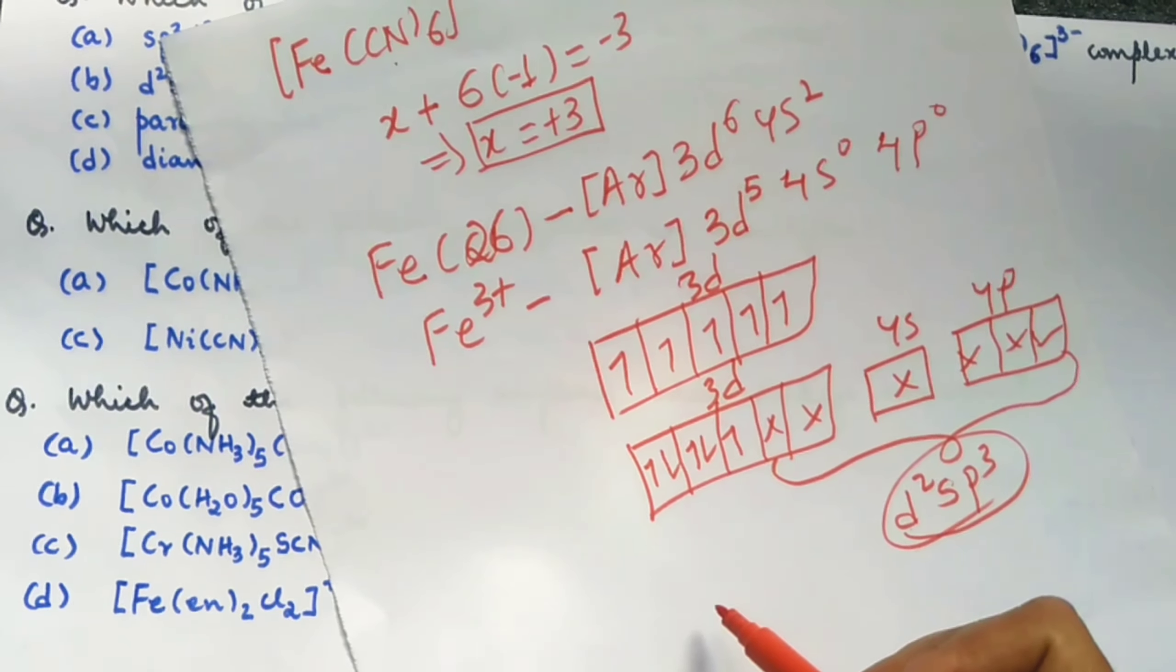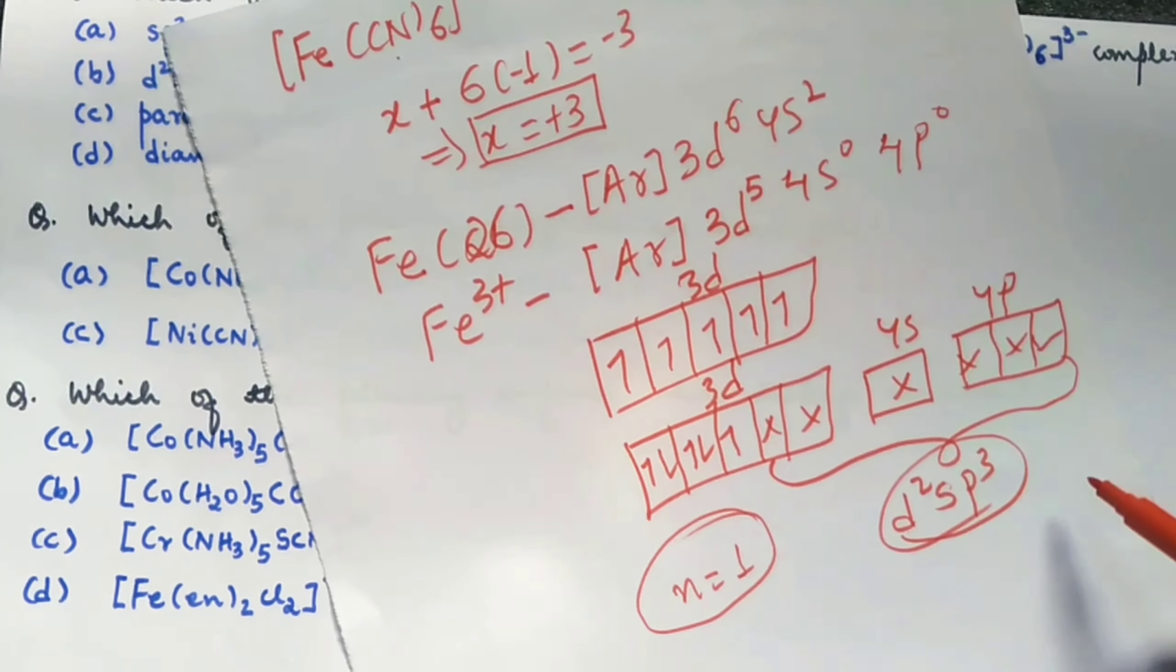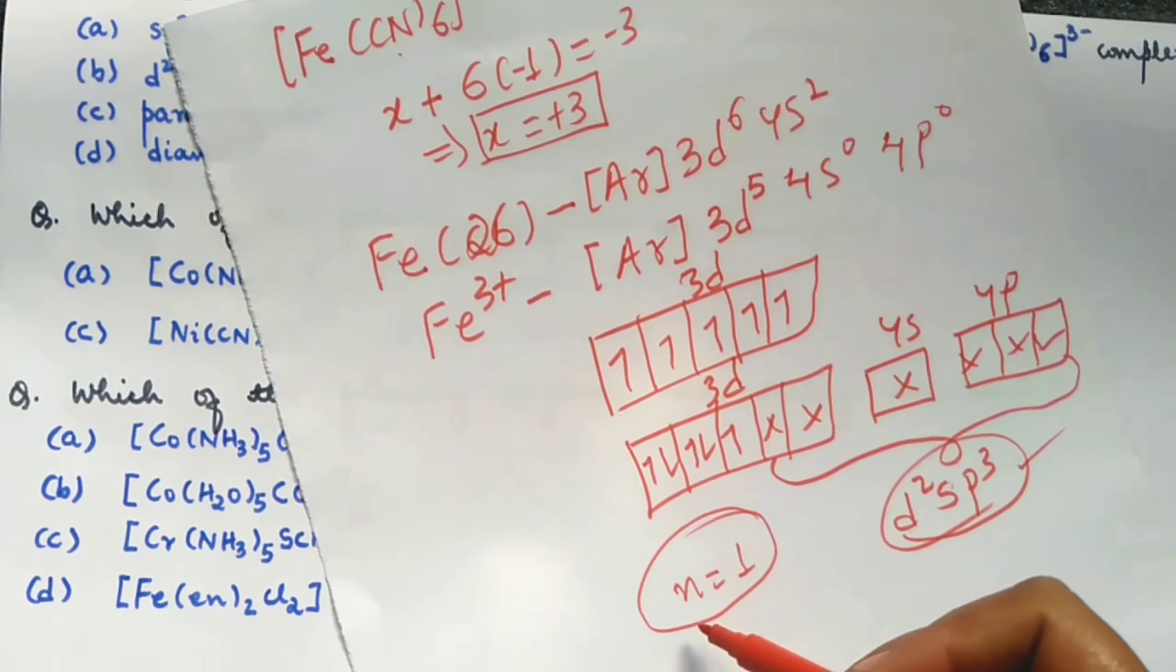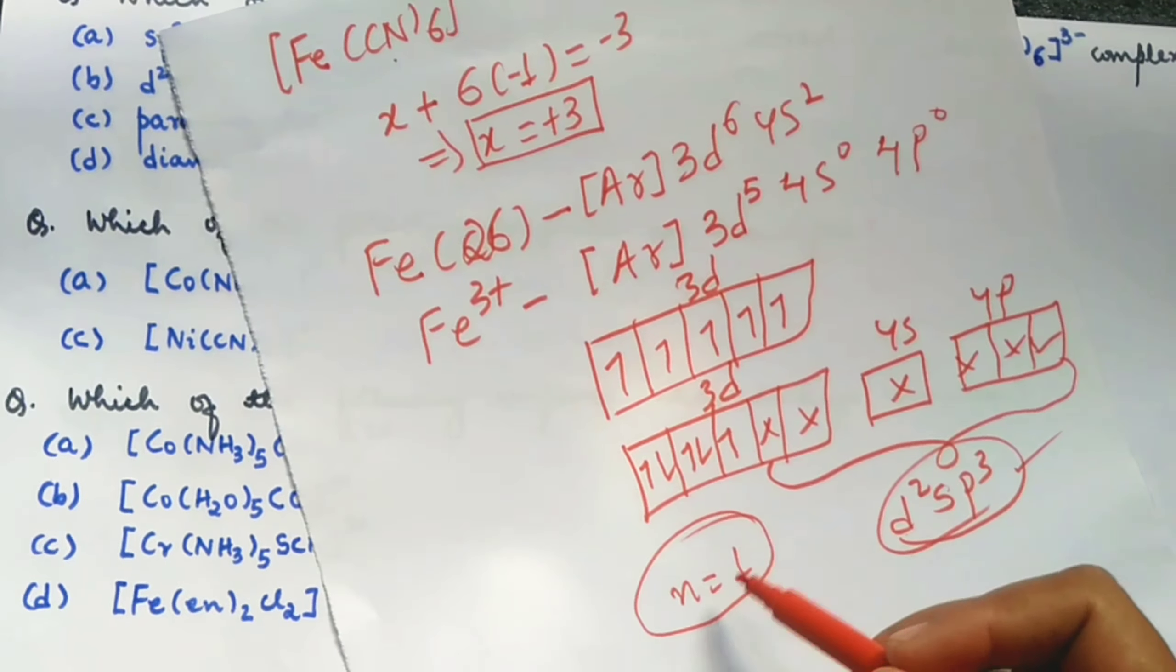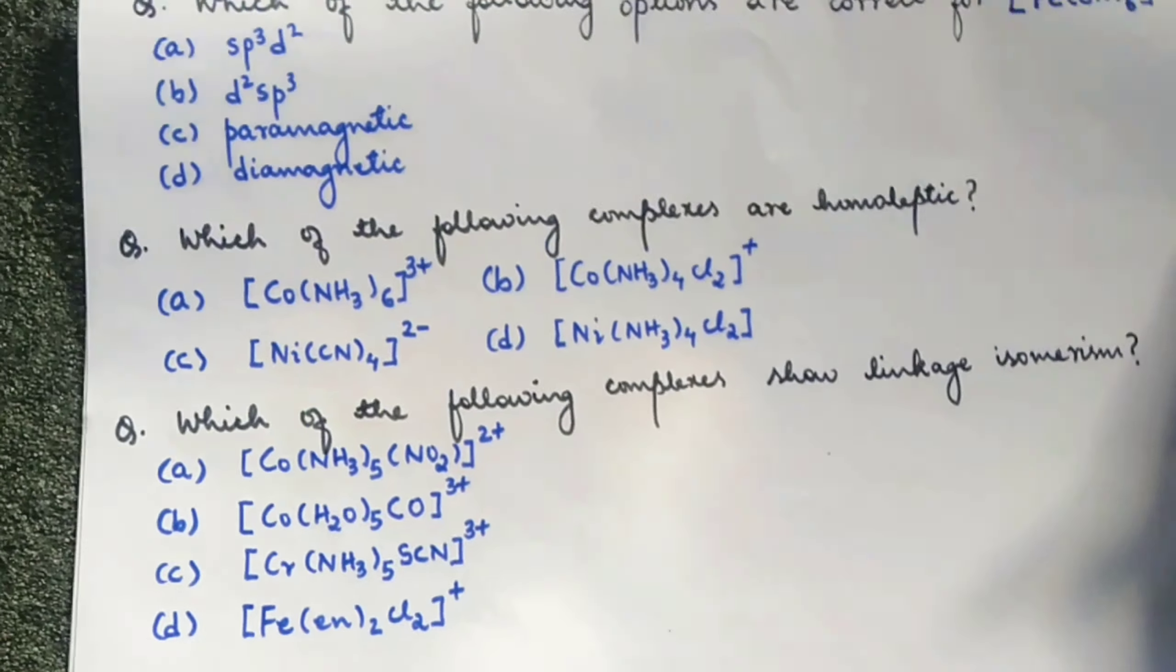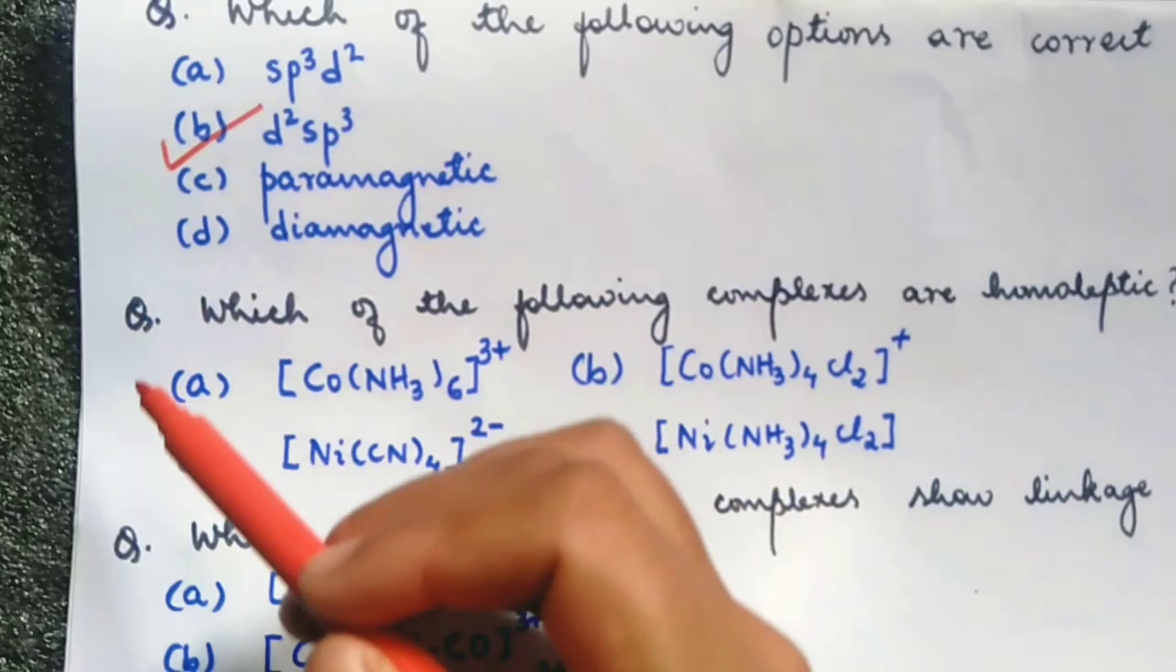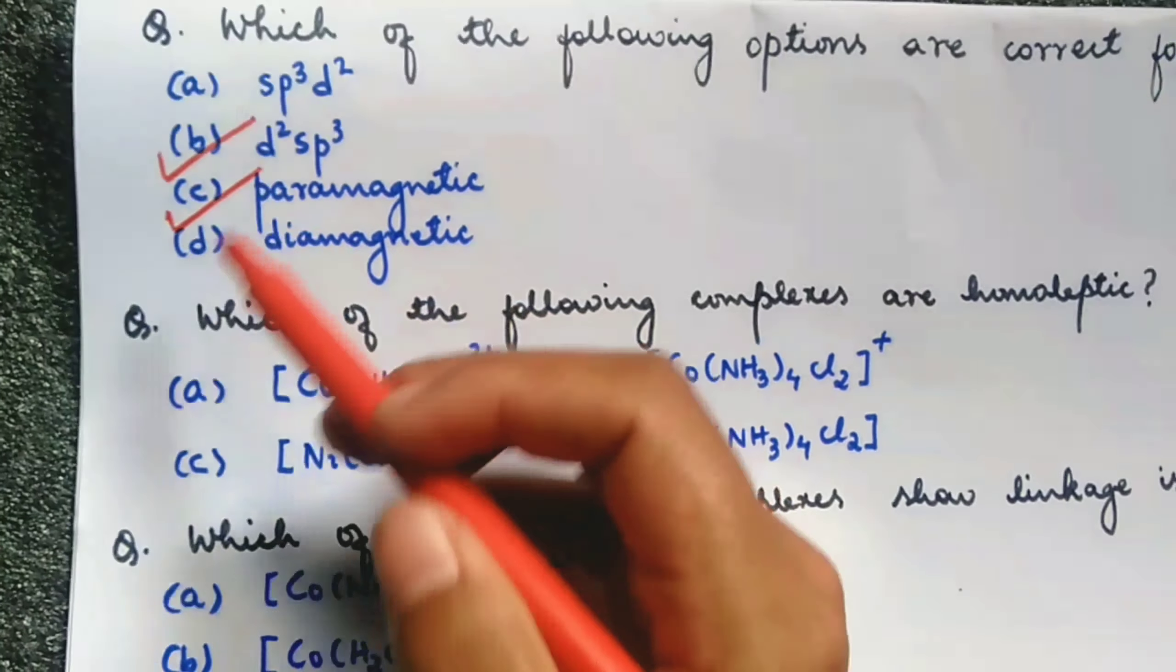Now, is there any unpaired electron? Yes, there is one. So it is paramagnetic. Hybridization is D2sp3 and the magnetic nature is paramagnetic. So, correct answer would be D2sp3 paramagnetic.